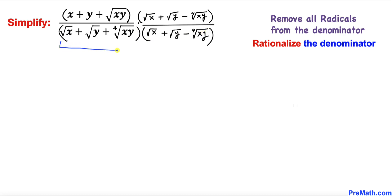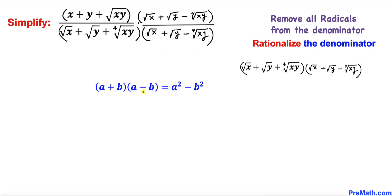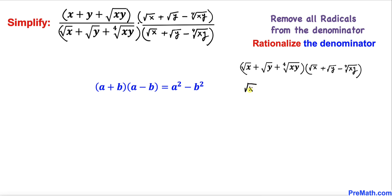Let's focus on the denominator. Recalling the well-known identity a plus b times a minus b equals a squared minus b squared — if we call the first part a and the fourth root of x y as b — the denominator becomes: square root of x plus square root of y, whole squared, minus the fourth root of x y, whole squared.